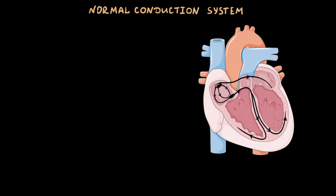Let's review how the normal conduction system works. Regular heartbeats occur when the sinus node conducts an electrical signal down to the atrioventricular node. Further, this electrical signal goes down to the bundle of His and Purkinje fibers in the ventricles. The result is the contraction of the ventricles and pumping of blood from the heart to the arteries. Normally, rhythmic contraction of the entire heart is initiated and maintained by the single pacemaker — the sinus node. Therefore, it is the primary pacemaker.